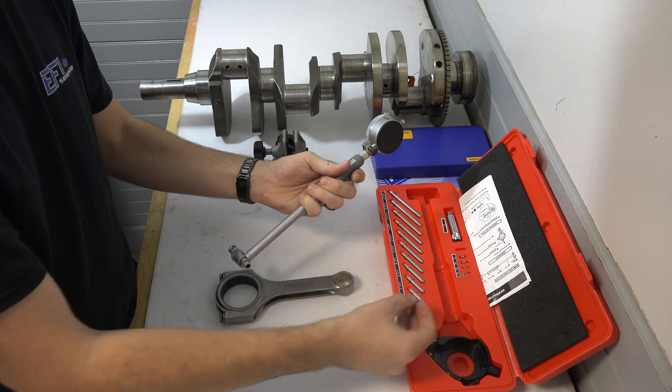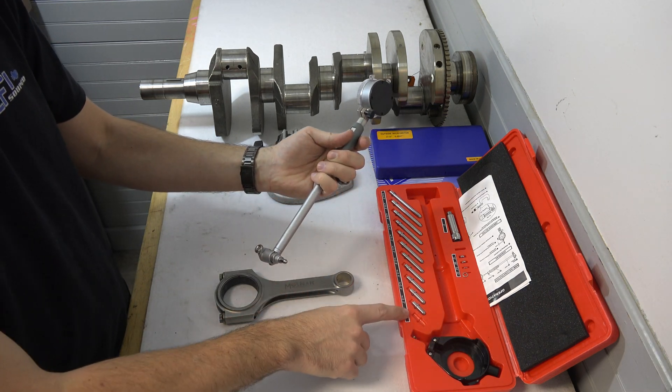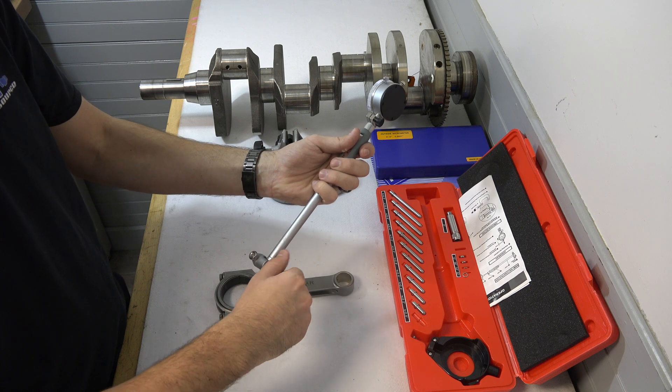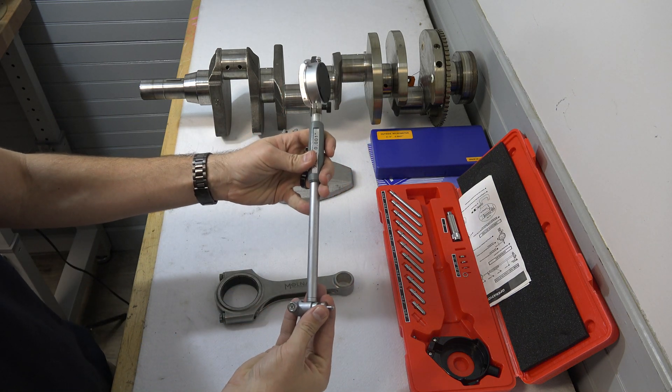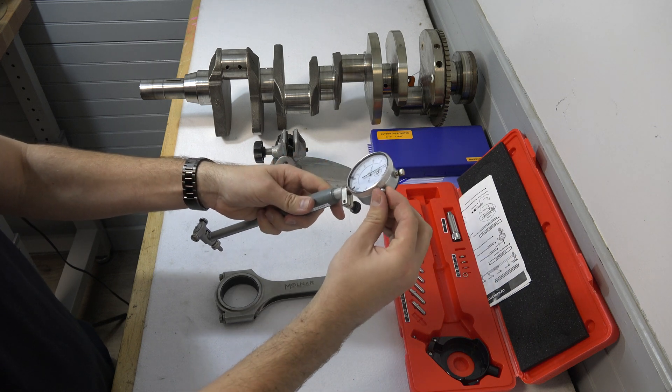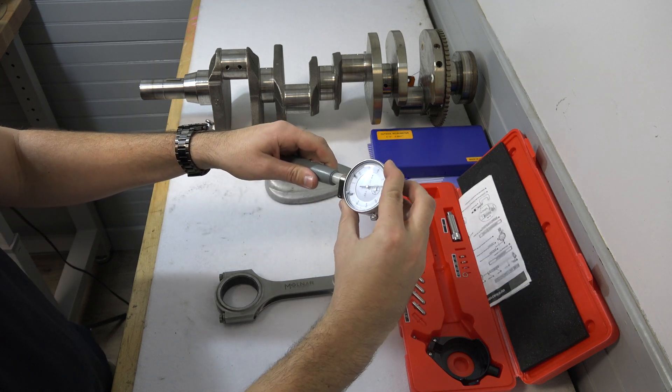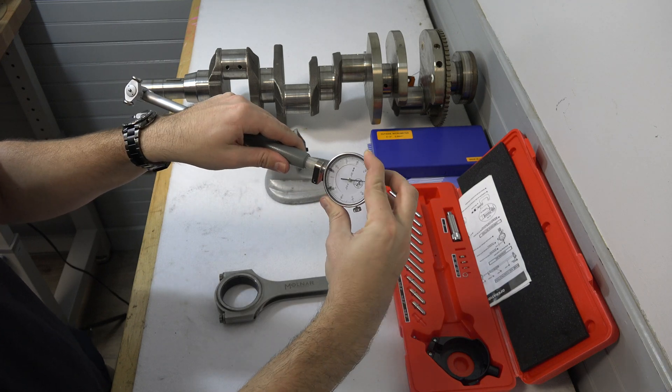All right, grab the two inch indicator tip out here. We're going to lock it down there with the little lock collar. We want to loosen our thumb screw here. That way we can rotate our dial back and forth.